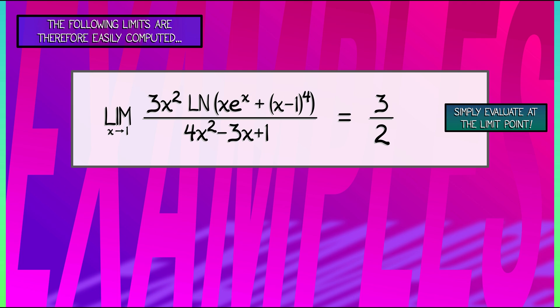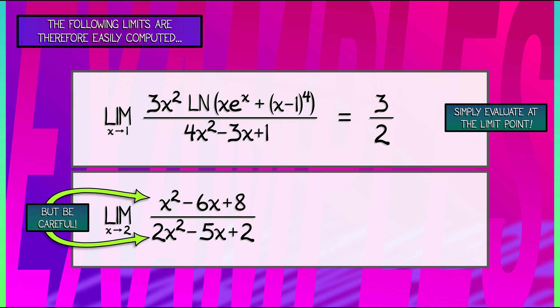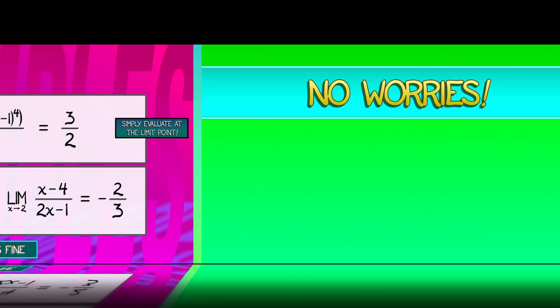Now, things can get a little more complicated. Consider the limit as x approaches 2 of x squared minus 6x plus 8 divided by 2x squared minus 5x plus 2. This looks simple, but you've got to be careful. When I try to evaluate this, I get 0 over 0. That's not going to work. But these quadratic polynomials factor. Each has a quantity x minus 2 factor within it. So if I factor those out, cancel numerator and denominator, I'm left with the limit as x approaches 2 of x minus 4 divided by 2x minus 1. That evaluates to negative 2 thirds, and this is fine. There are no worries.